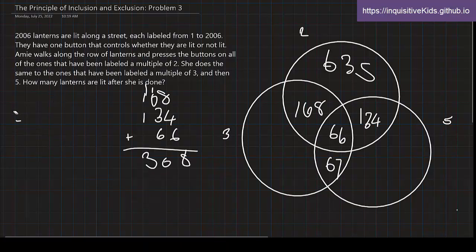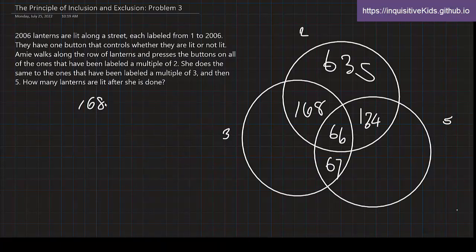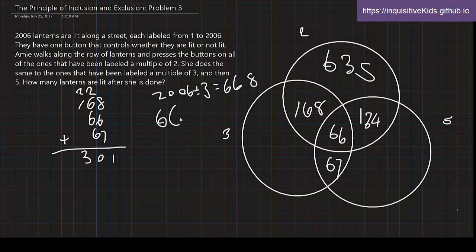Now we do the same to the other regions. Now it's really just adding and then subtracting. So what is 168 plus 66 plus 67? This is 301. And we subtract that from 2006 divided by 3, which is 668. We subtract 301 from 668, we get 367. So over here, this is 367.